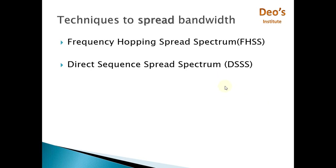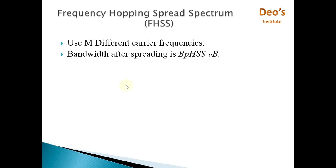There are two techniques for spreading the bandwidth. The first is Frequency Hopping Spread Spectrum — FHSS — and the second is Direct Sequence Spread Spectrum — DSSS. The FHSS technique uses M different carrier frequencies that are modulated by the source signal. At one moment, the signal modulates one carrier frequency, and at the next moment it modulates another carrier frequency. Although modulation is done one carrier frequency at a time, M frequencies are used in the long run, so the bandwidth occupied by the source after spreading, BFHSS, is very, very greater than B.